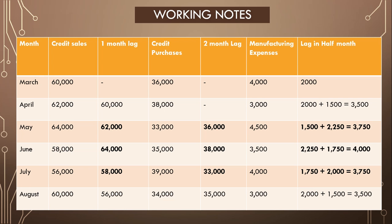We have made a working note for credit sales. The lag is one month, so when there are credit sales in March they will get realized in April — 60,000 realized in April. Then 62,000 of April realized in May, 64,000 of May realized in June, 58,000 of June realized in July, and 56,000 of July realized in August.